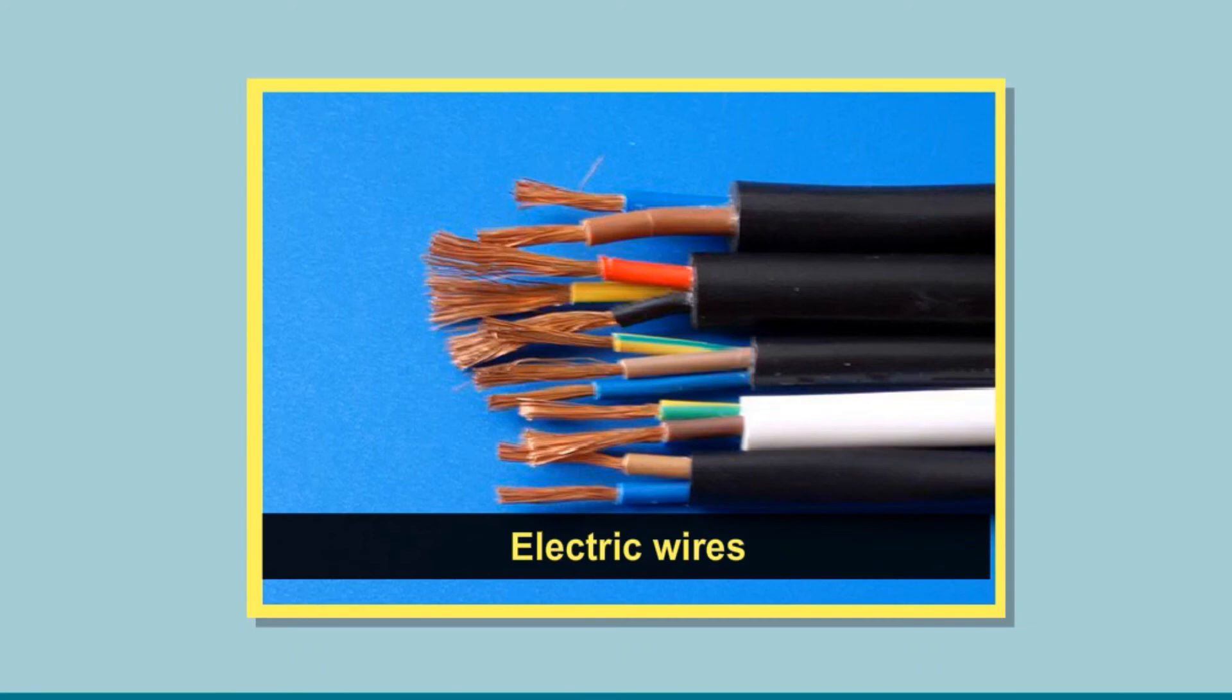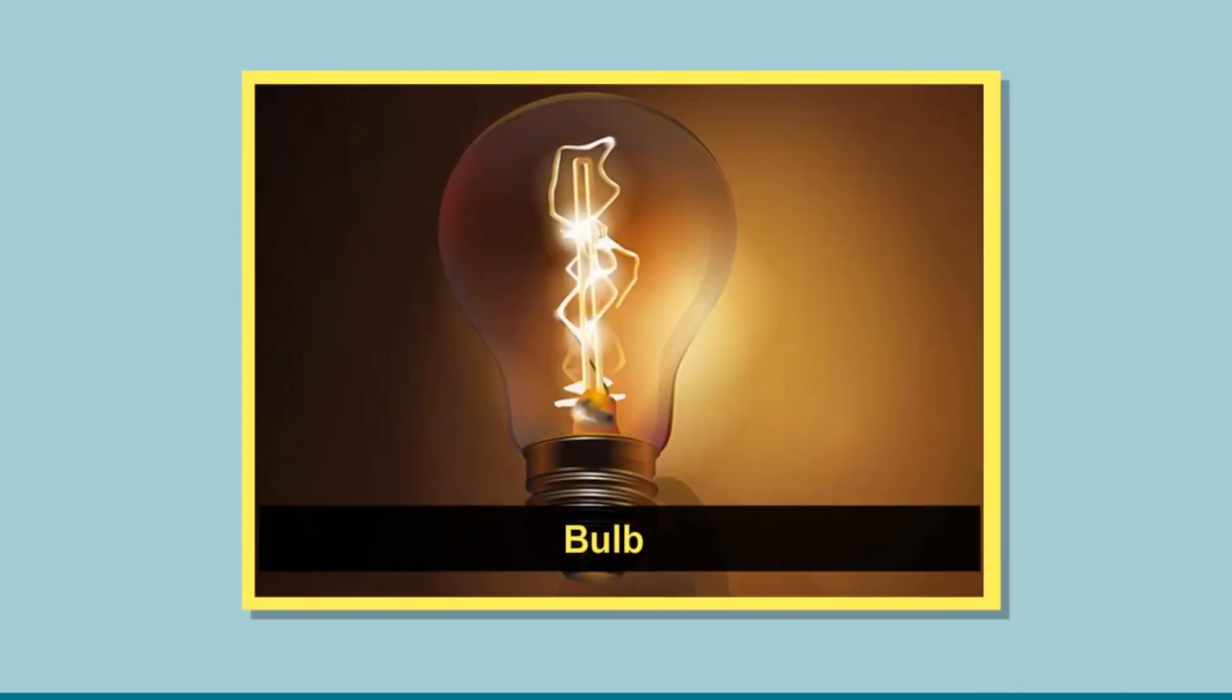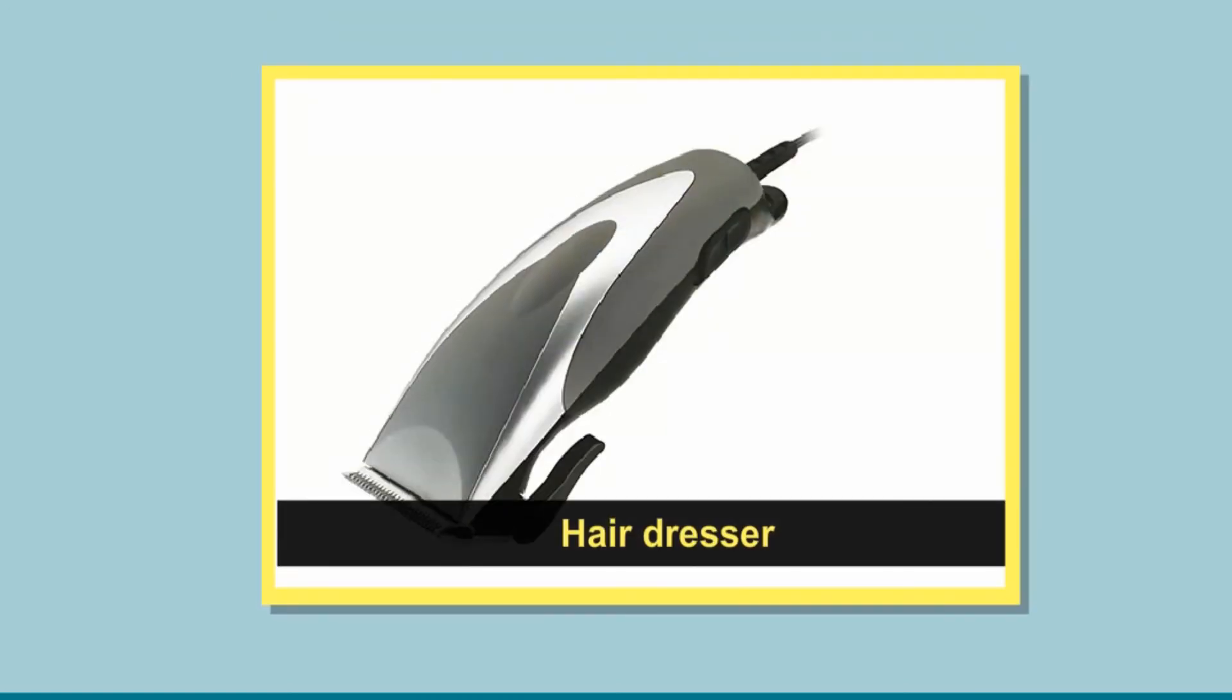2. Wires which allow the current to pass through them. These are generally made of copper or aluminum. 3. A device which needs current to work, for example, a bulb, hairdryer and toy fan.